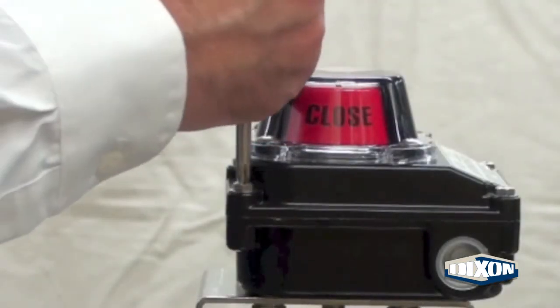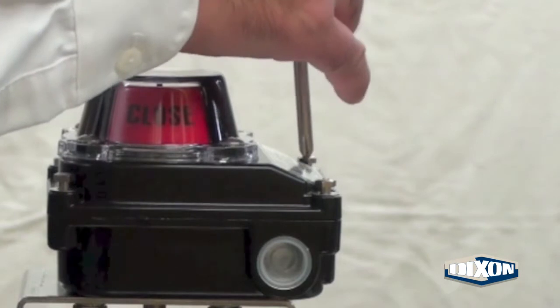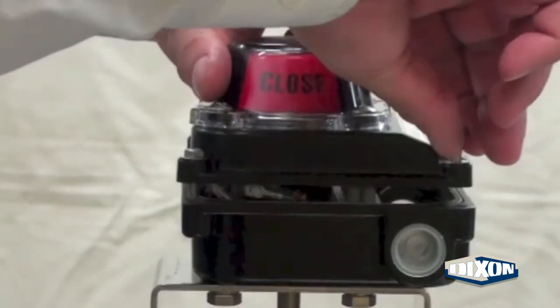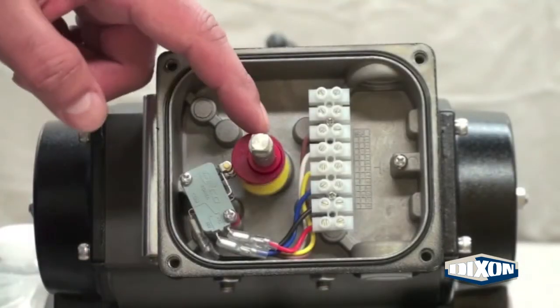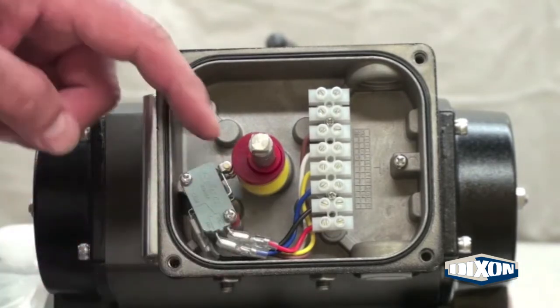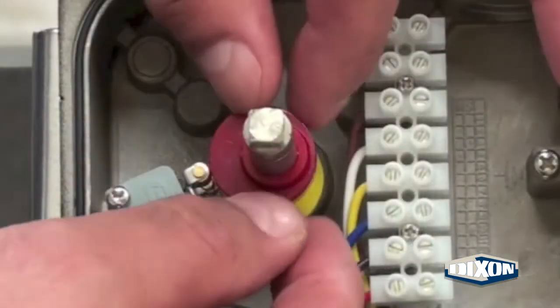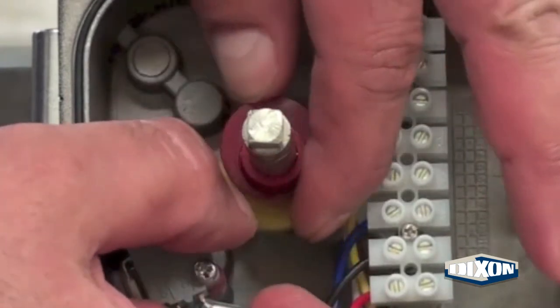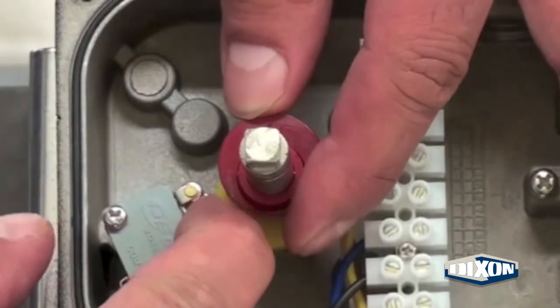Back out the captive cover bolts on the limit switch box. Carefully lift off the cover of the limit switch. Set the cams inside the limit switch box so that they depress the micro switches. Push down on the cam so it clears the splines, rotate and release.